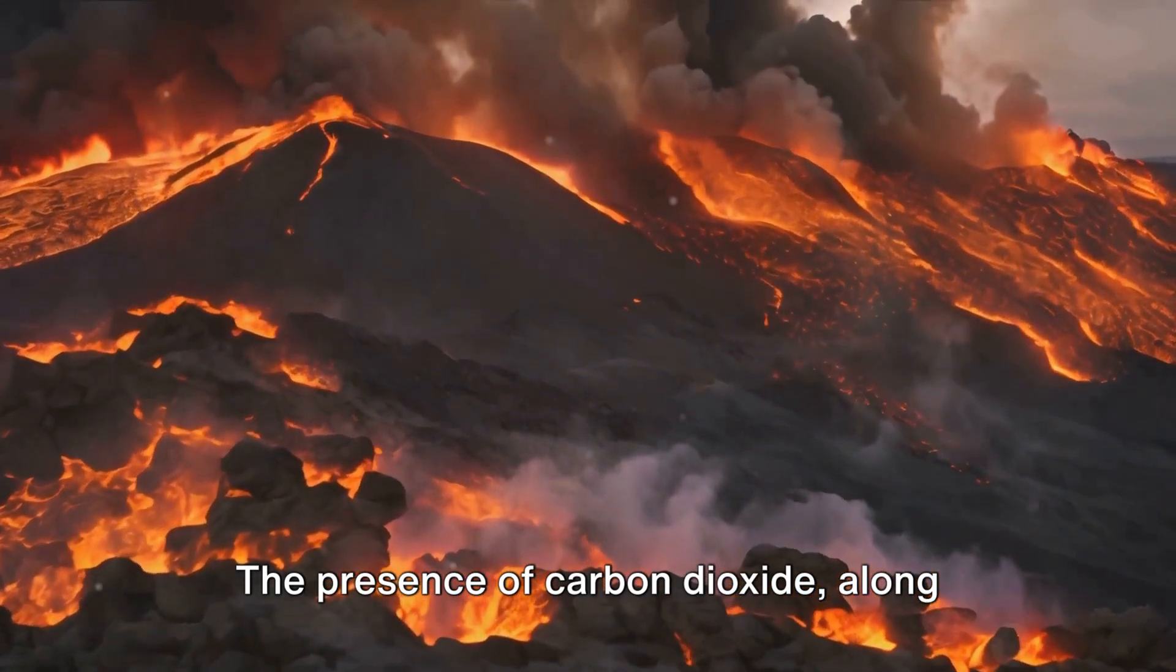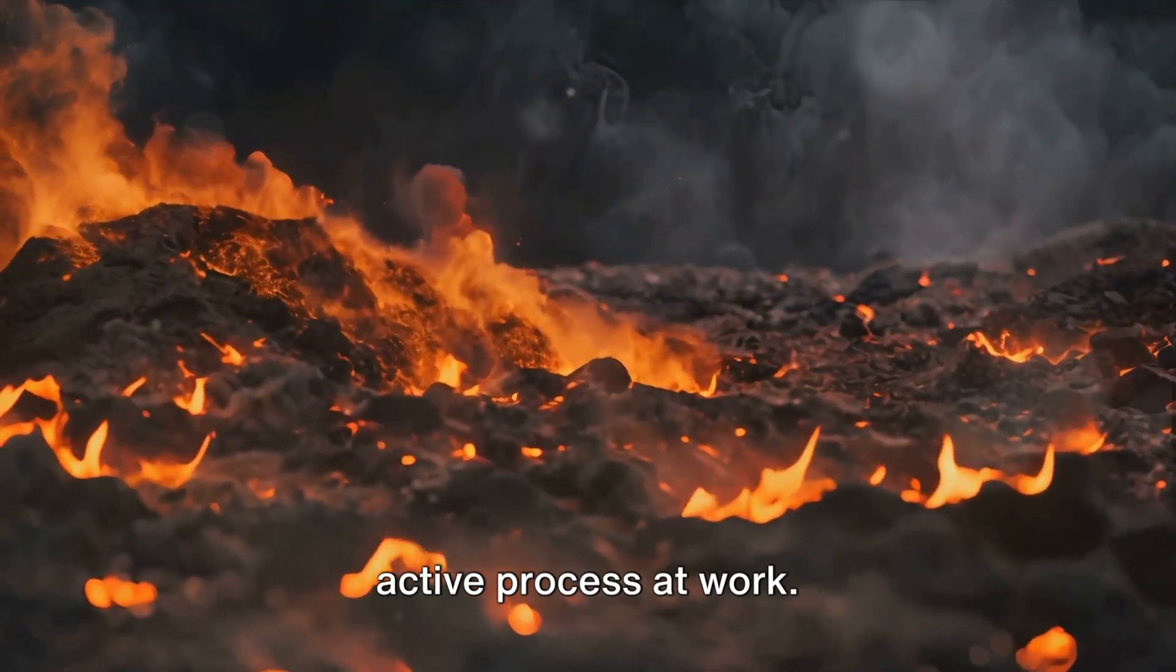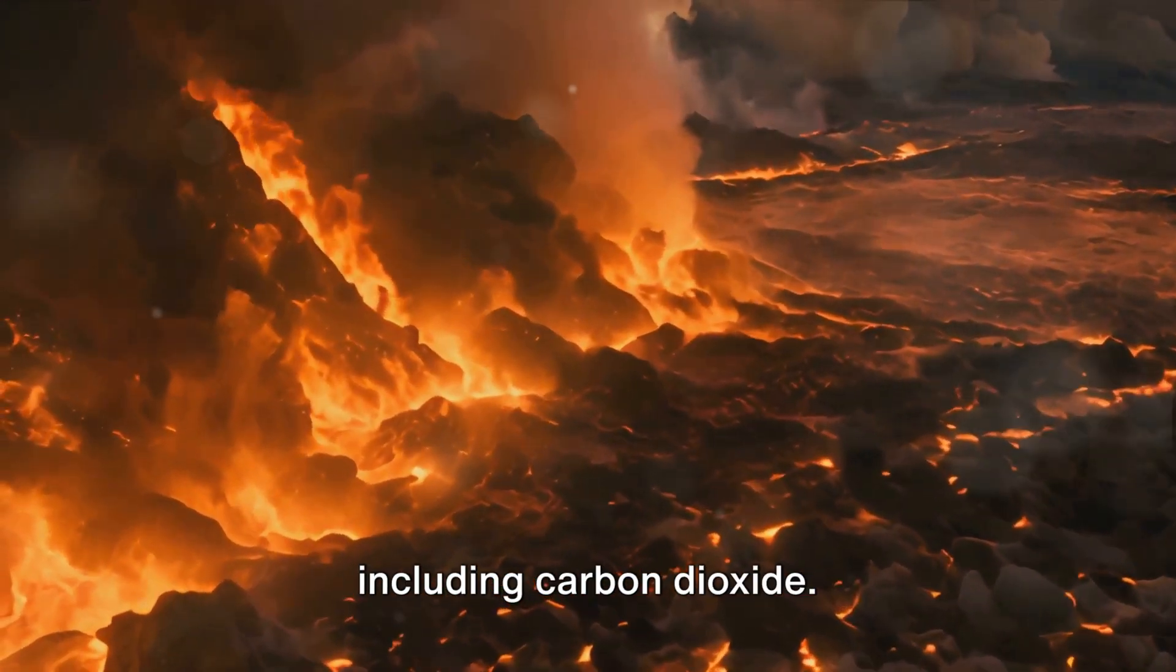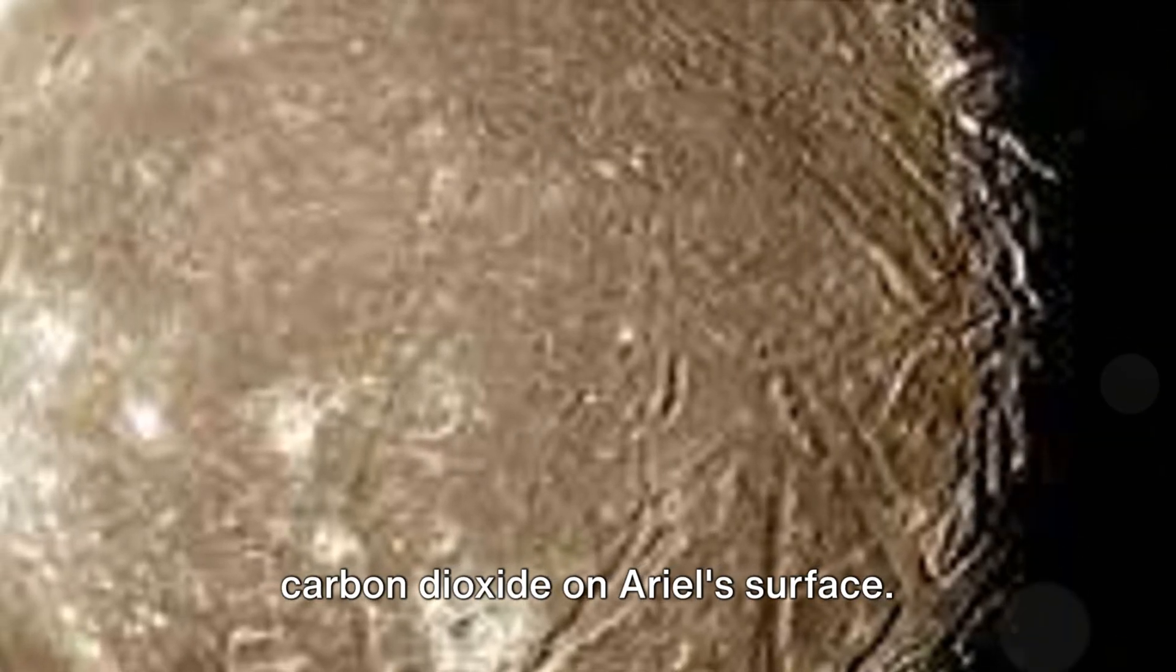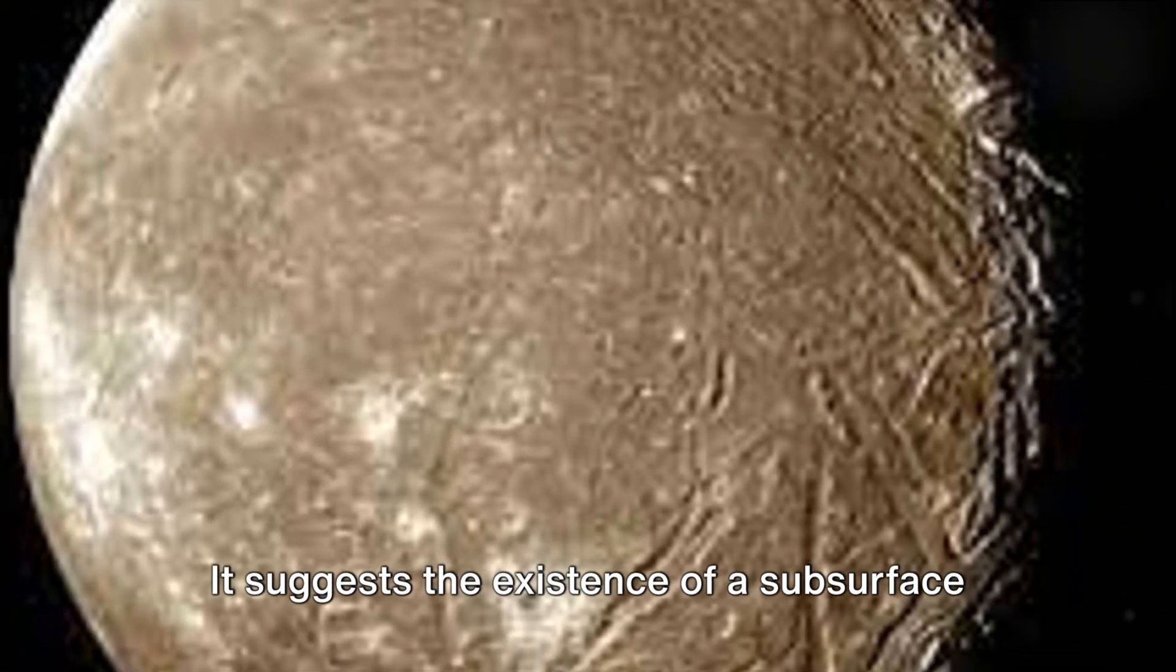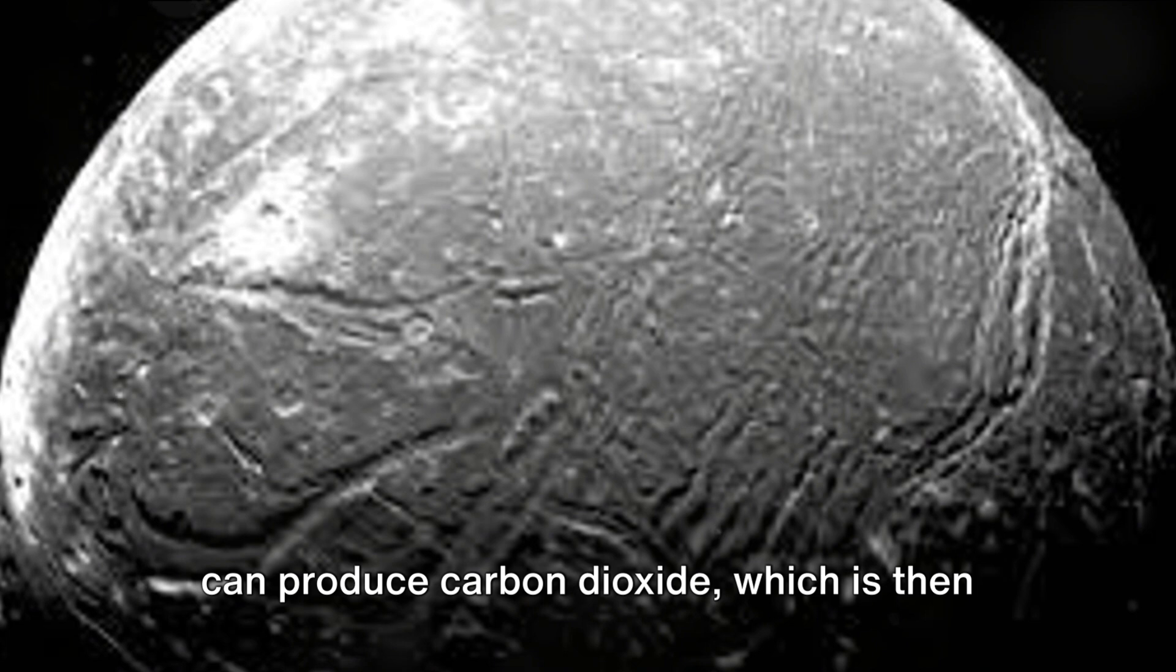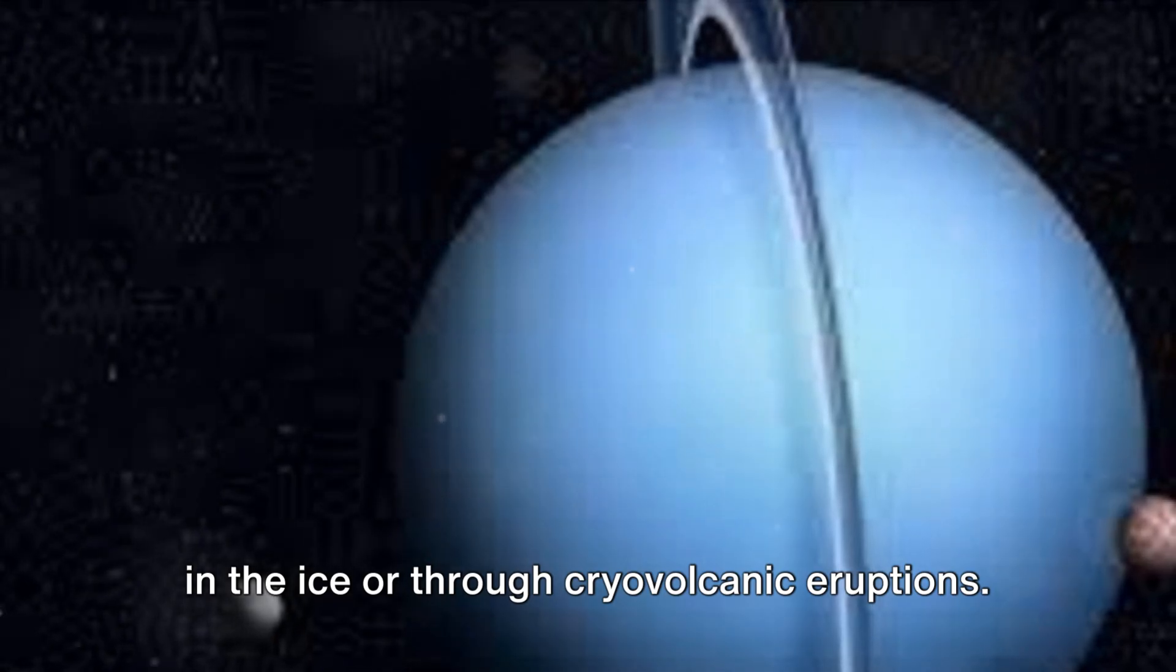The presence of carbon dioxide, along with other carbon compounds like carbon monoxide and carbon oxides, suggests an active process at work. One possibility is cryovolcanic activity, where icy volcanoes spew out a mixture of water, methane, and other substances, including carbon dioxide. This process could be replenishing the carbon dioxide on Ariel's surface. But the detection of carbon dioxide also implies something more profound. It suggests the existence of a subsurface ocean, where the carbon dioxide could originate. The interaction of liquid water with rock can produce carbon dioxide, which is then expelled onto the surface through cracks in the ice or through cryovolcanic eruptions.